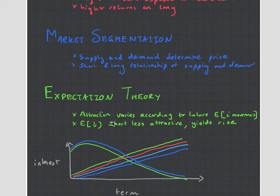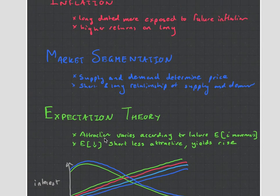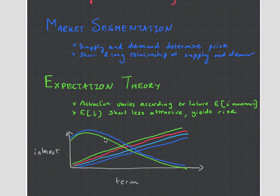Finally, expectation theory - the most important one. It says attraction varies according to future expected interest rate movements. How does the market expect interest rates to change in the future? If we expect a decrease in short-term assets, they become less attractive and yields will rise. Even though this is the dominant theory, it's also the most vague - it almost takes into consideration all other factors and builds them in, becoming almost a self-fulfilling prophecy. I'd recommend researching it further on Investopedia if you're still having difficulty.